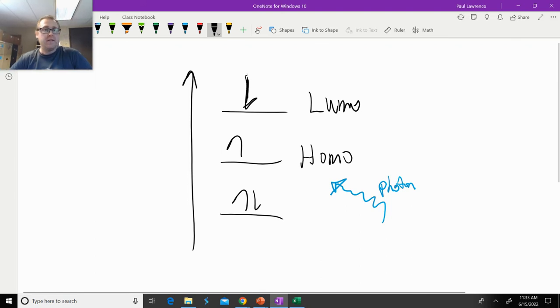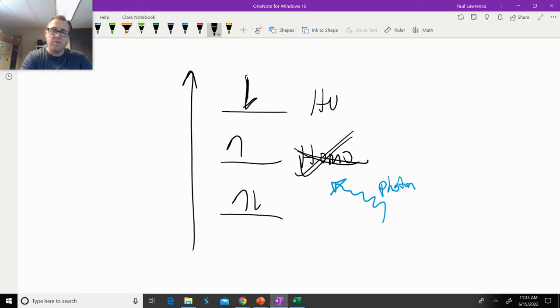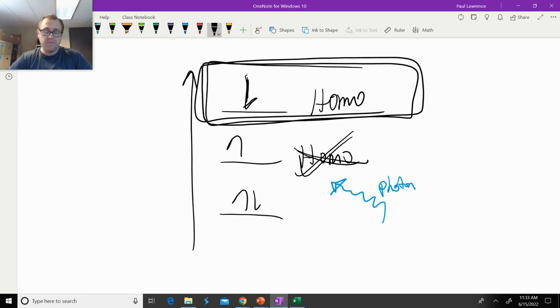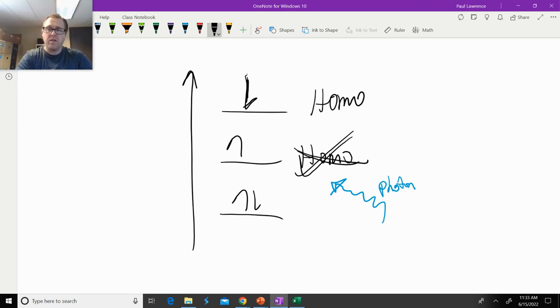There's our electron. Now what happens is this is no longer the HOMO. The LUMO now becomes the HOMO. So now we need to look at the molecular orbitals of the new HOMO, which we would just call the HOMO in the excited state.